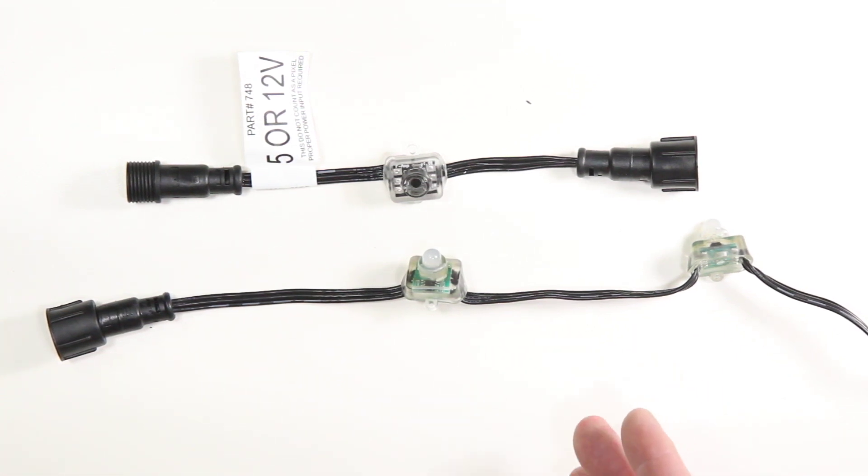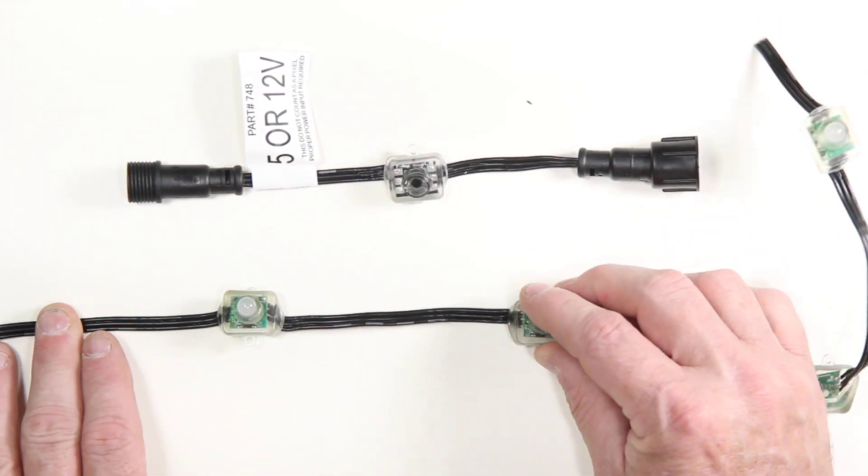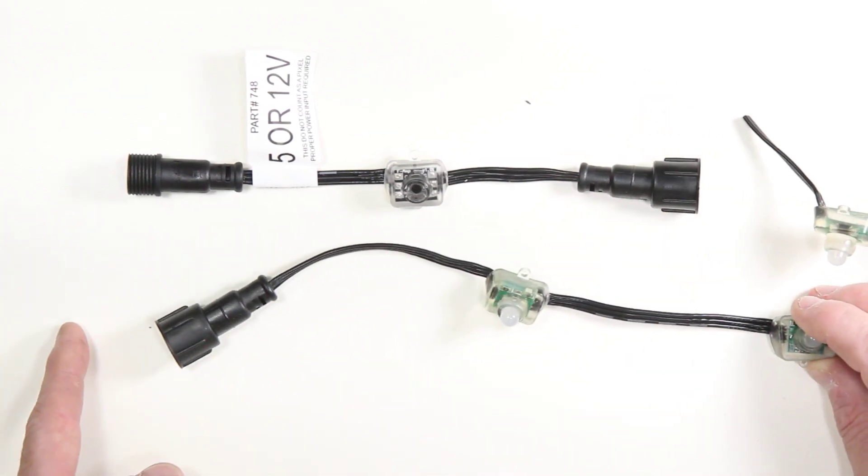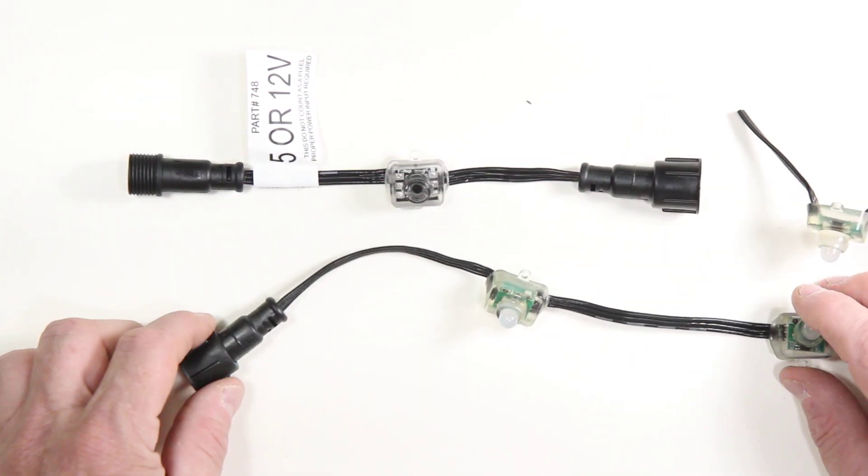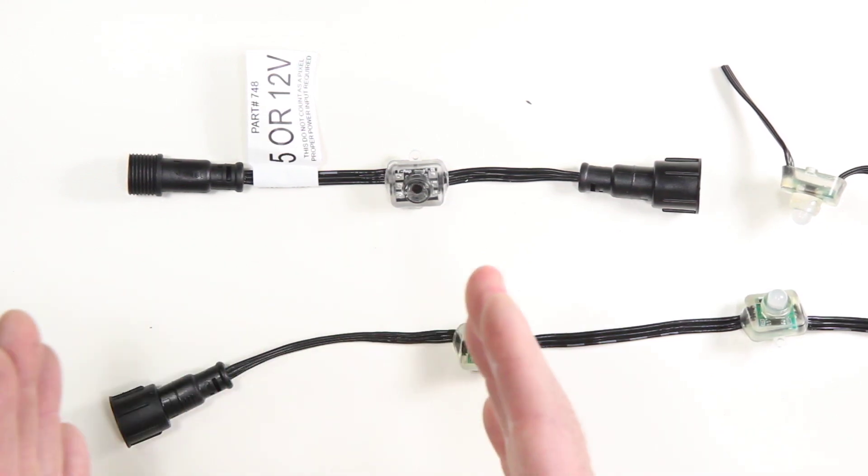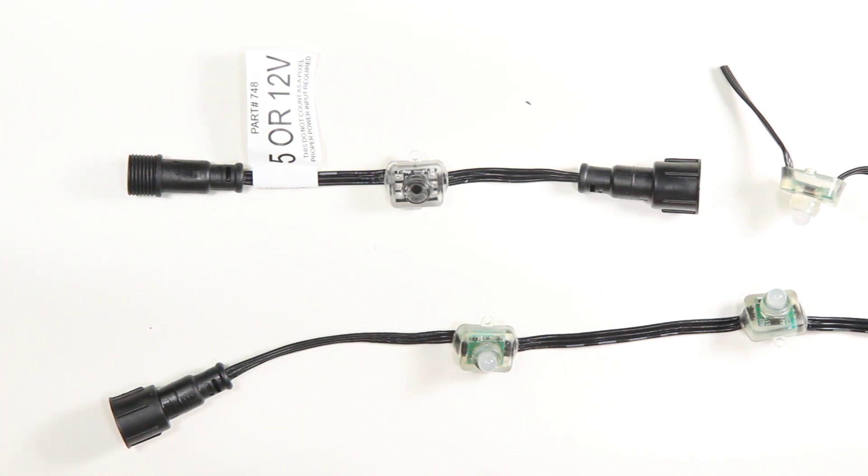And then at some point, once you reach a certain distance, that whisper will become audible to the receiver. That's what pixels are doing. Pixels are sending signal from one pixel to the next pixel or from the controller to the first pixel.